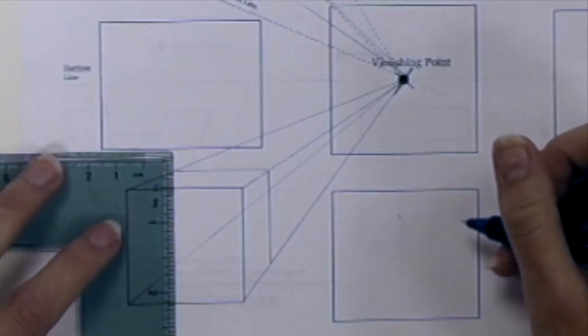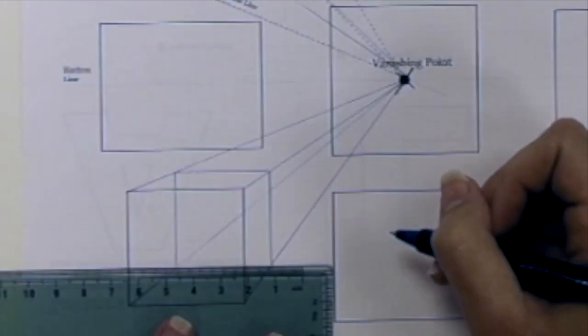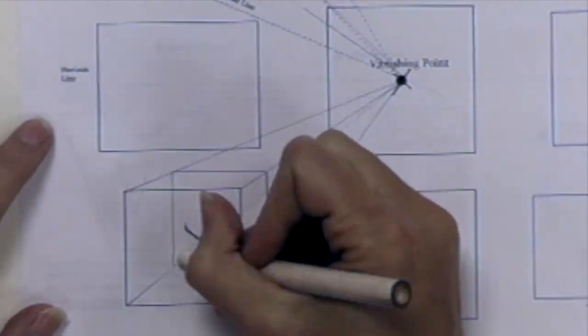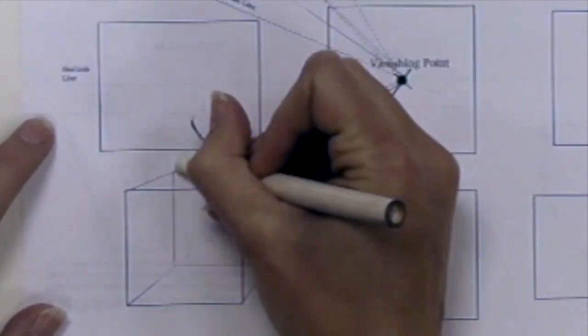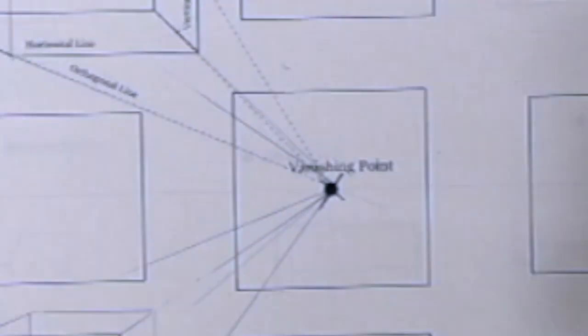Here I am deciding how deep the box should be. Once one of these vertical lines is drawn, you can connect with horizontals and verticals to finish the box. See? There it is.